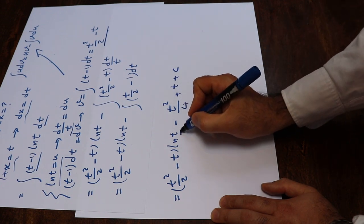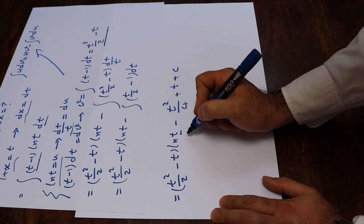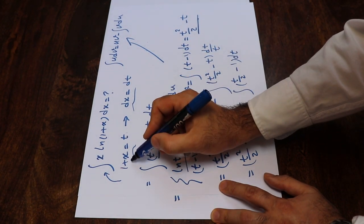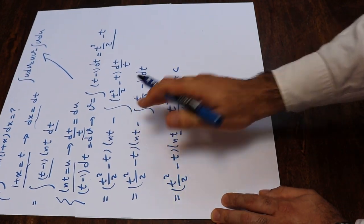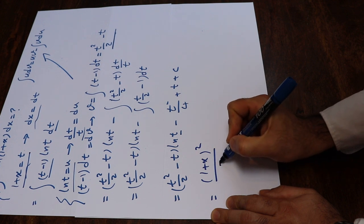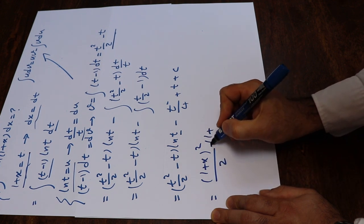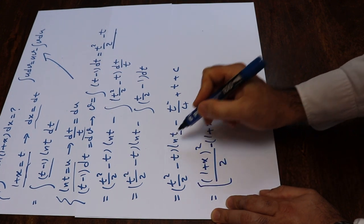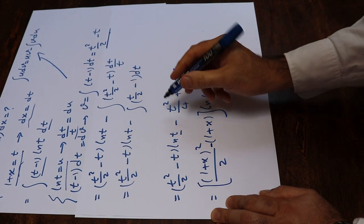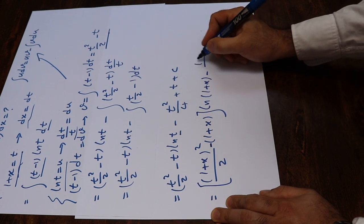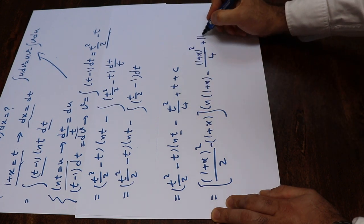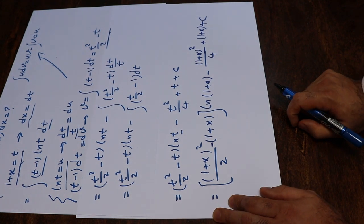All you need to do now is substitute t back using its definition t equals 1 plus x. So the result is (1 plus x) squared over 2 minus (1 plus x), all times ln(1 plus x), minus (1 plus x) squared over 4 plus (1 plus x) plus C, which is the constant of integration.